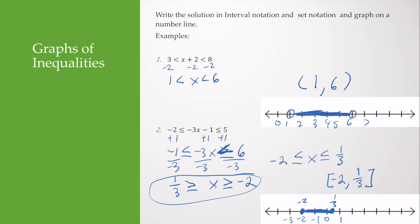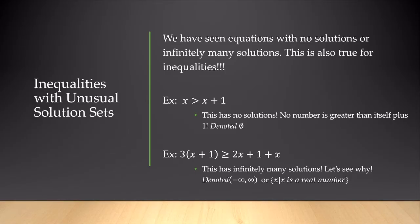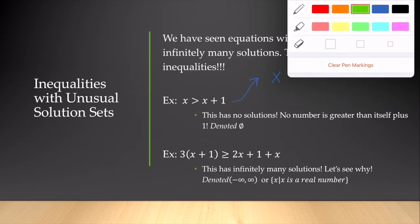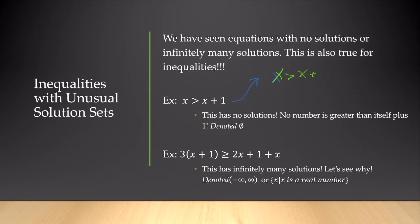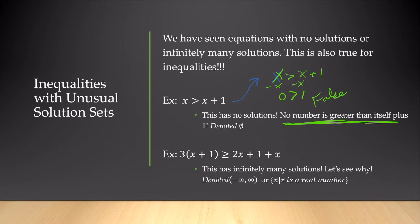Remember, we read interval notation from left to right. Lastly, let's discuss inequalities with unusual solution sets. Just like linear equations can have no solution (contradictions) or infinitely many solutions (identities), so can inequalities. For example, x is greater than x plus 1 — can x ever be greater than itself plus 1? No. Subtracting x from both sides gives 0 is greater than 1, which is false, so there are no solutions.